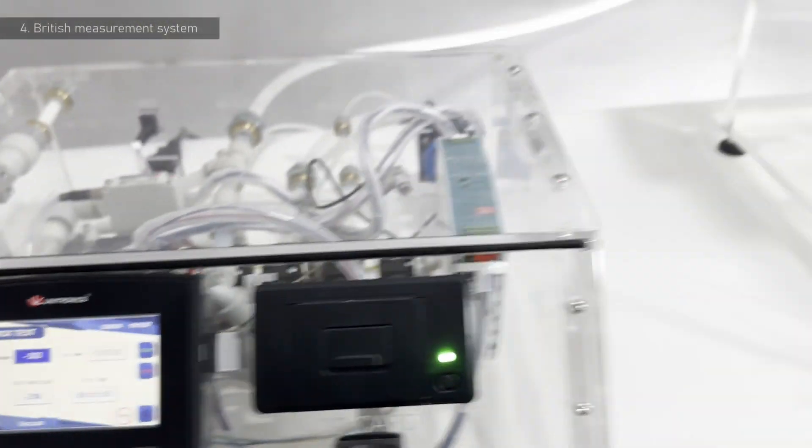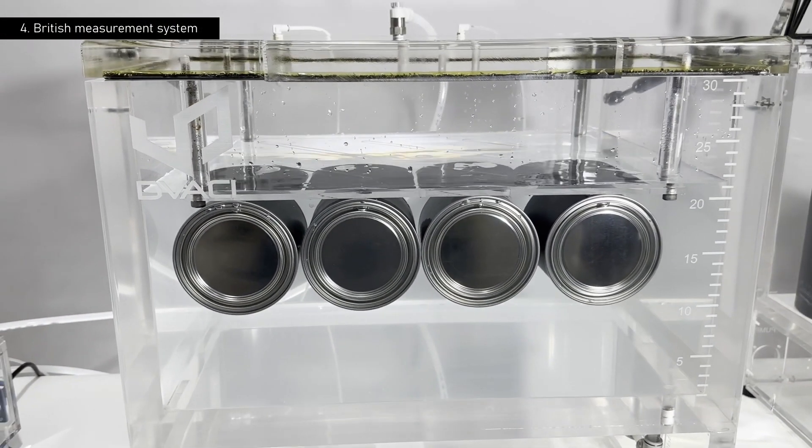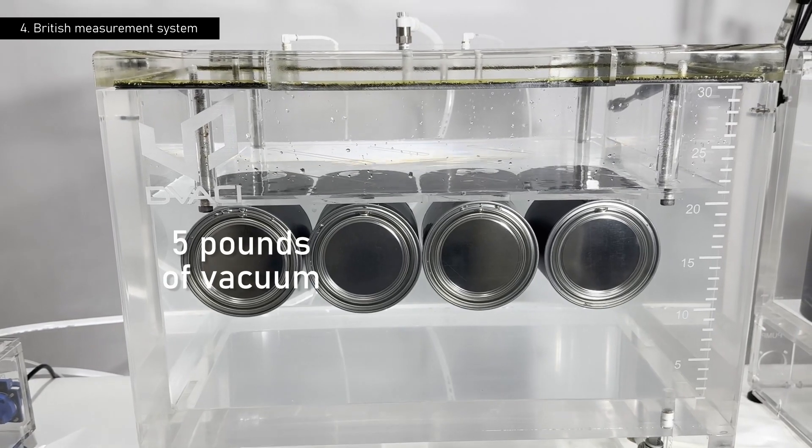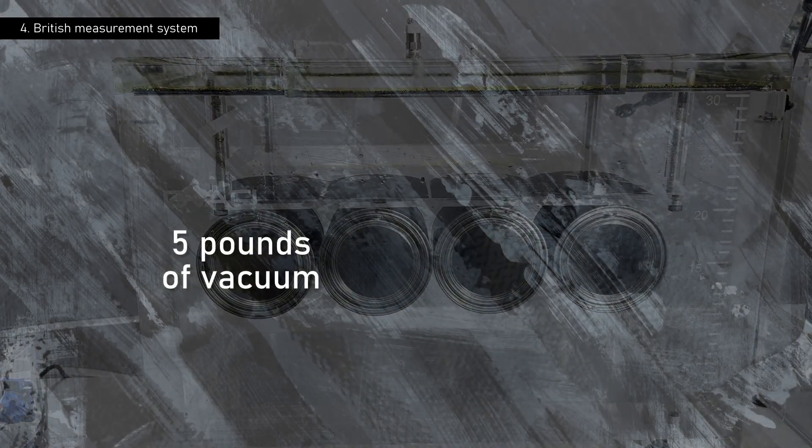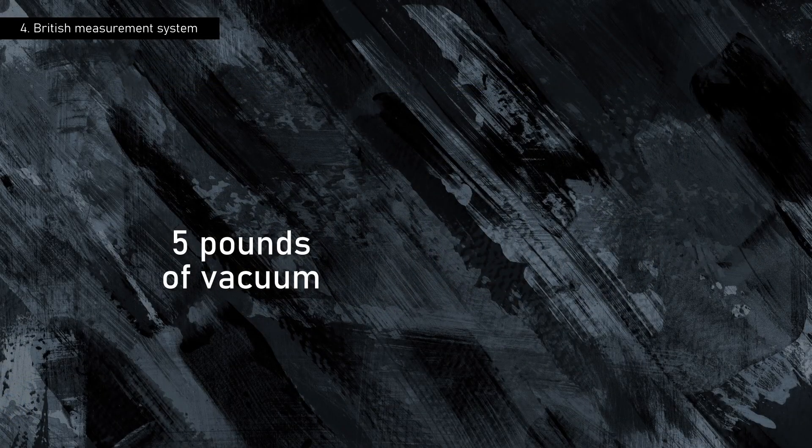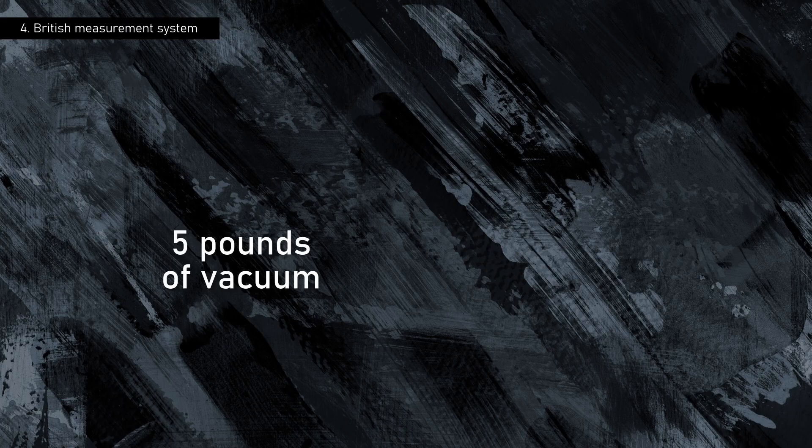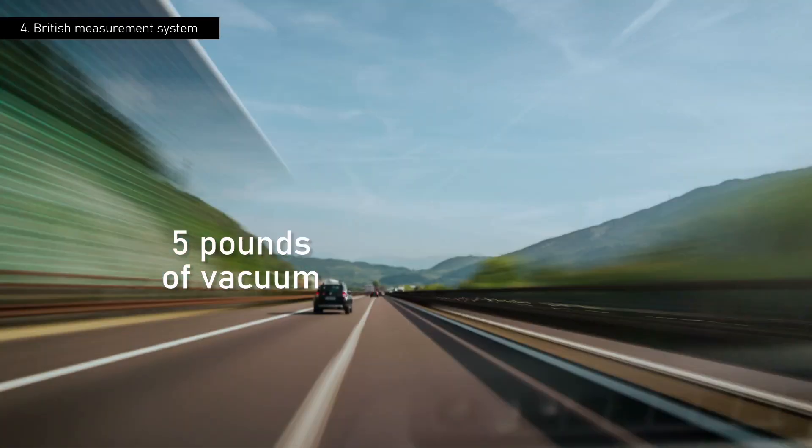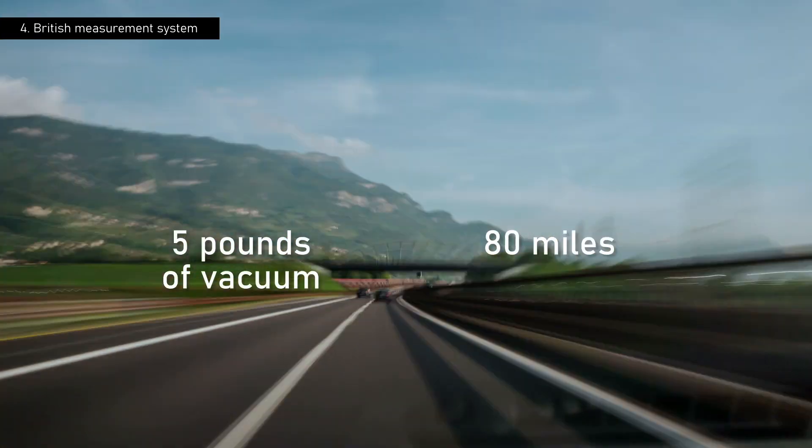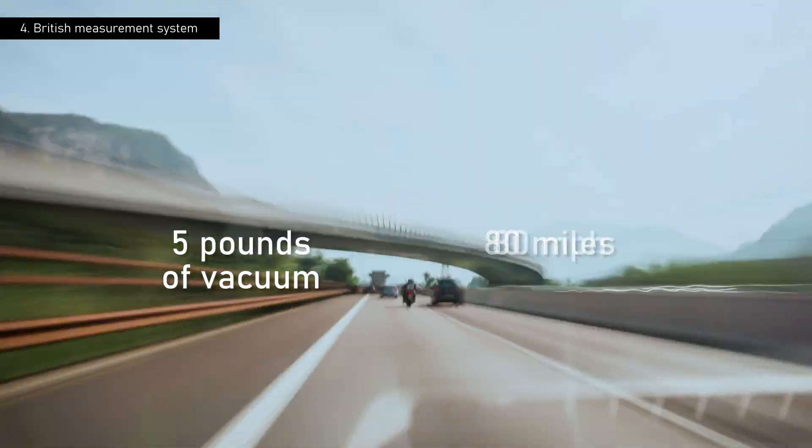Imagine for a moment that a customer asks us for a vacuum chamber capable of creating a vacuum of five pounds. Sounds strange, doesn't it? When someone mentions five pounds of vacuum, it is similar to if you asked, 'how fast is your car going?' And they replied, '80 miles.' The correct specification would be 80 miles per hour.